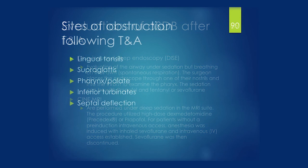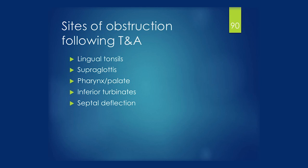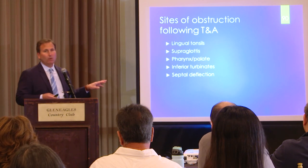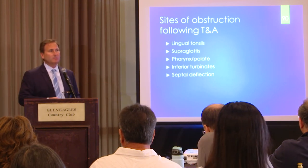The main findings after failed tonsillectomy and adenoidectomy include lingual tonsil hypertrophy, which can be surgically removed and has resolved obstructive apnea confirmed by sleep study. Supraglottoplasty for secondary laryngomalacia in preteens and teenagers has shown benefit. Pharyngeal and palatal floppiness is difficult to treat surgically — CPAP is often better, though the palate can sometimes be shortened. Inferior turbinate hypertrophy and septal deviation should also be evaluated. These are the main reasons children fail tonsillectomy and adenoidectomy.